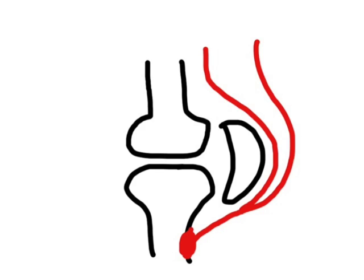Osgood-Schlatter's usually resolves without any complication. One of the common things you see is that if the pain and inflammation is there long enough, over time you may actually get a bony knot that develops at the front of your knee. You'll often see men and teenage boys with this knot at the front of the knee.